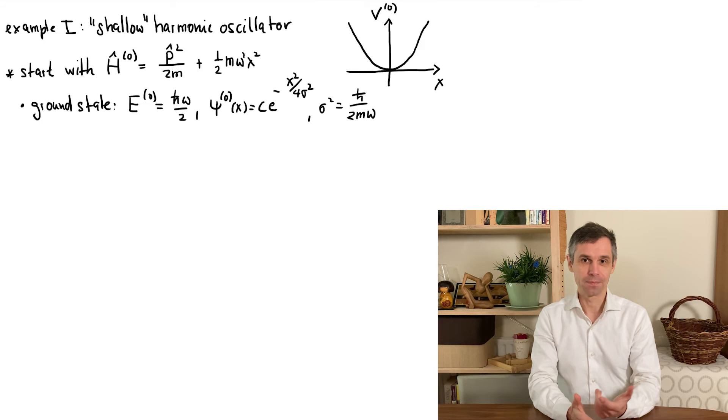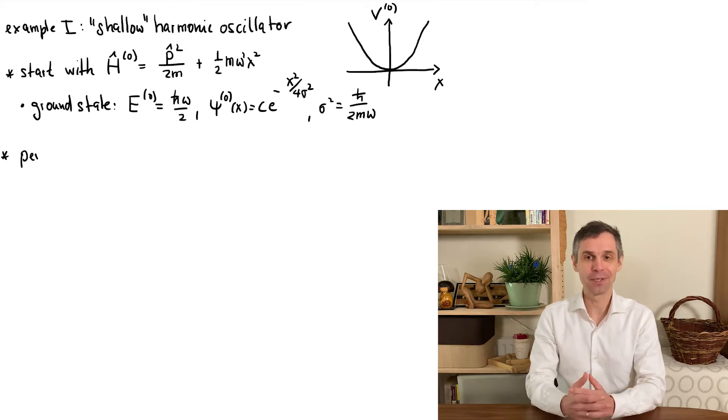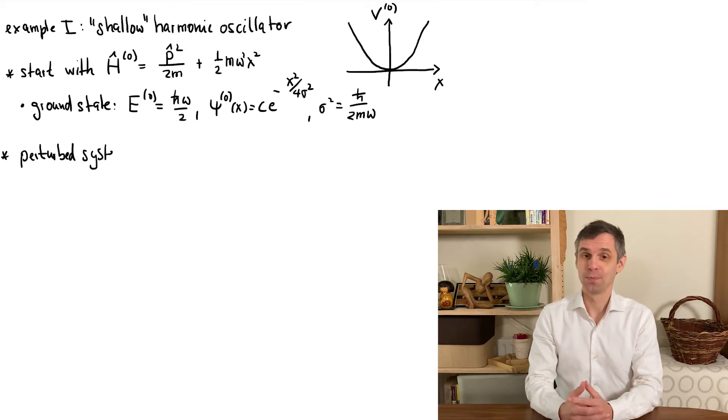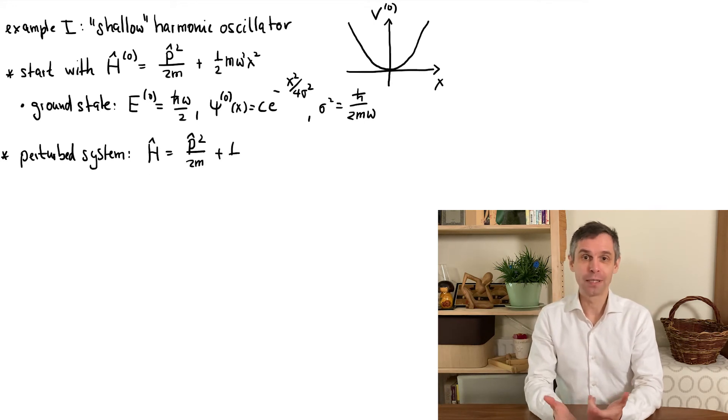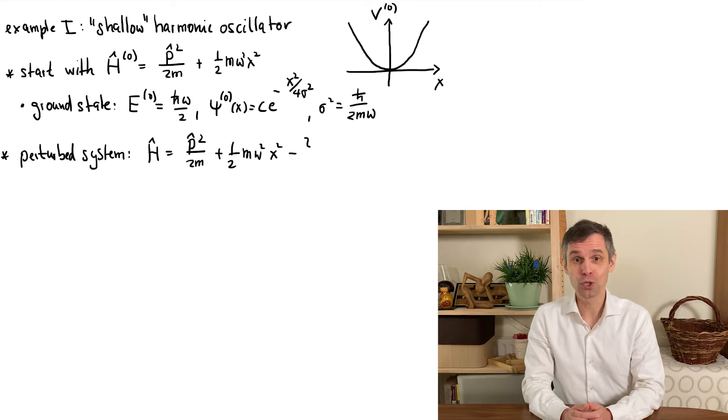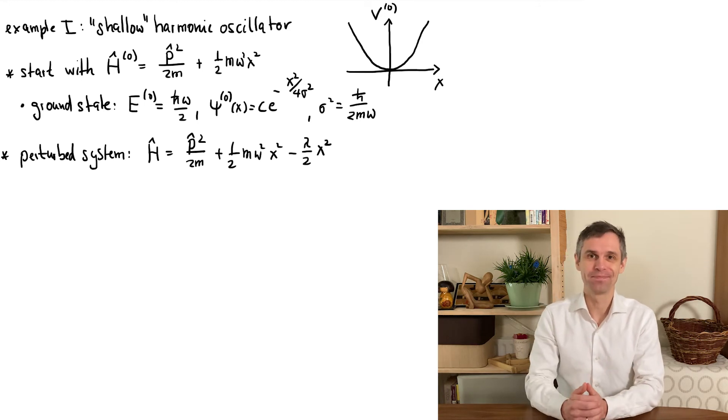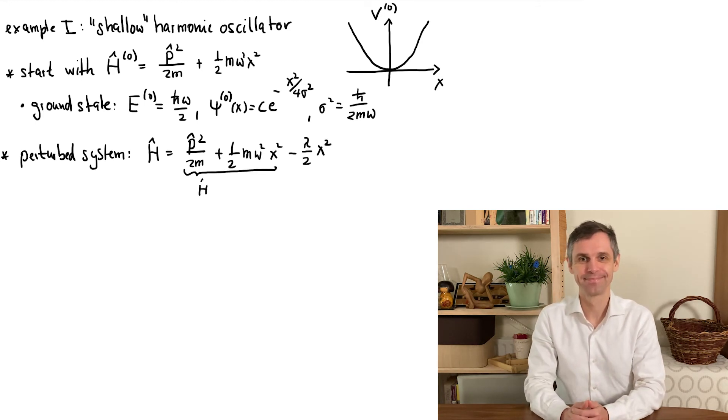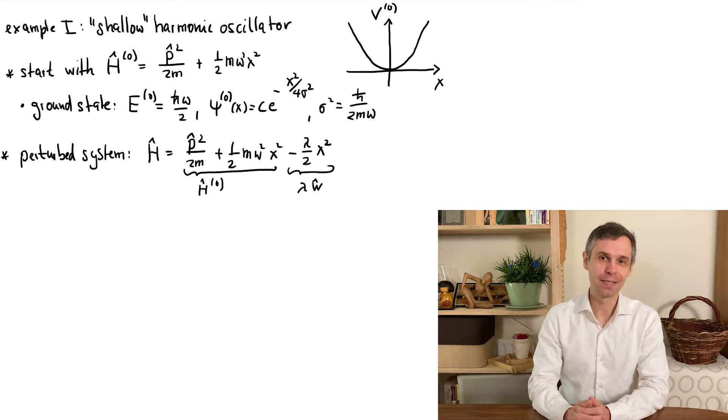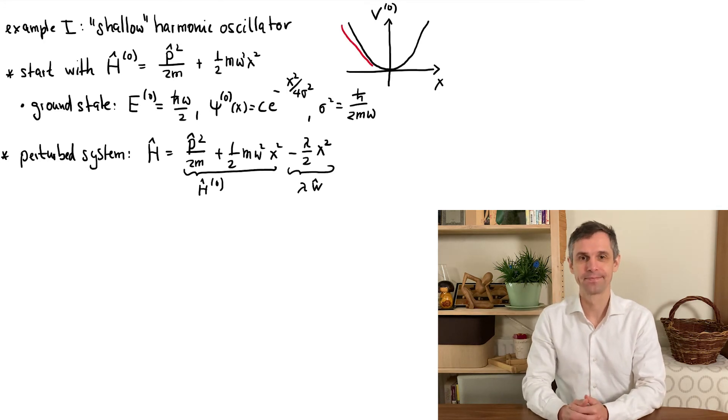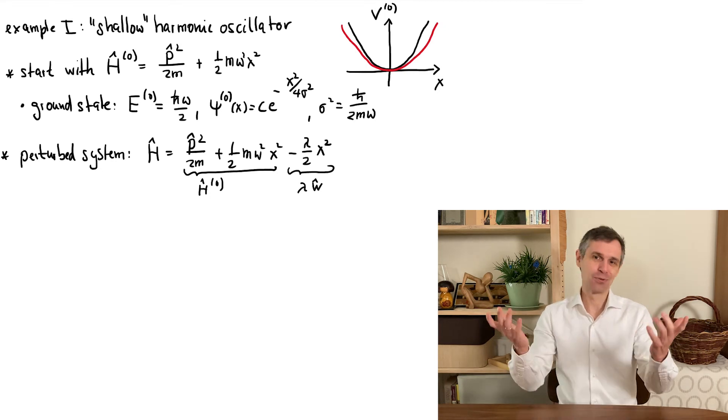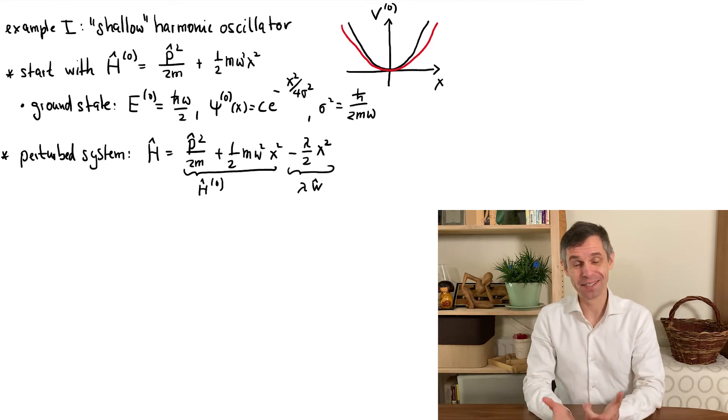In the first example here, I'm just going to assume that the potential remains parabolic, but is somewhat more shallow. That can be written as shown, so by including an extra term into the Hamiltonian, which is just our perturbation. If we sketch this potential, it may look a little bit more like what is shown here.